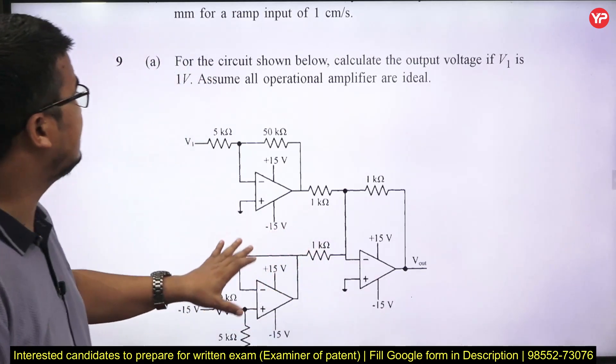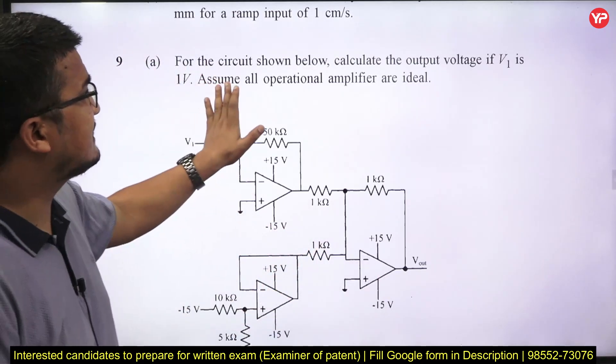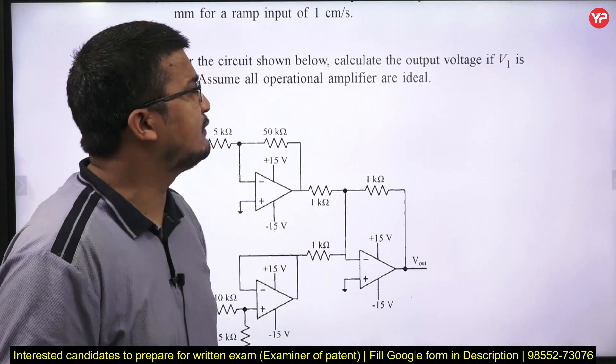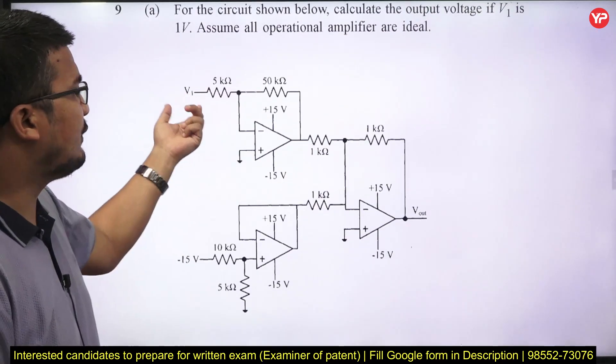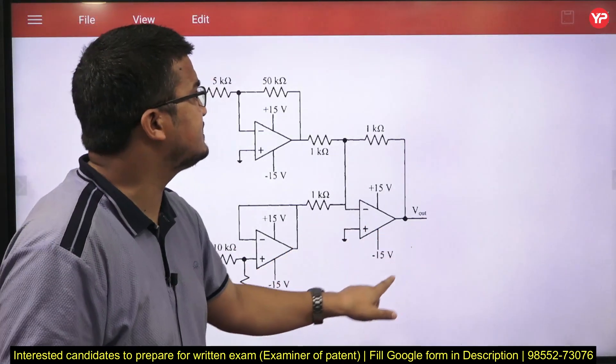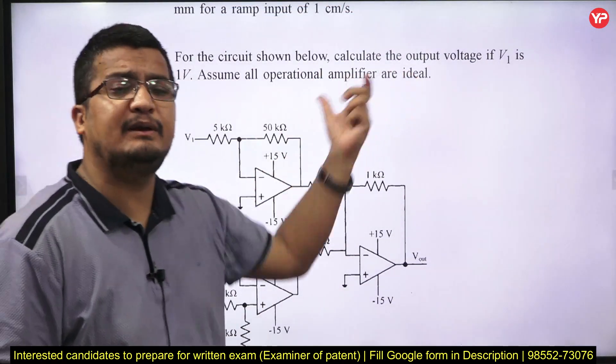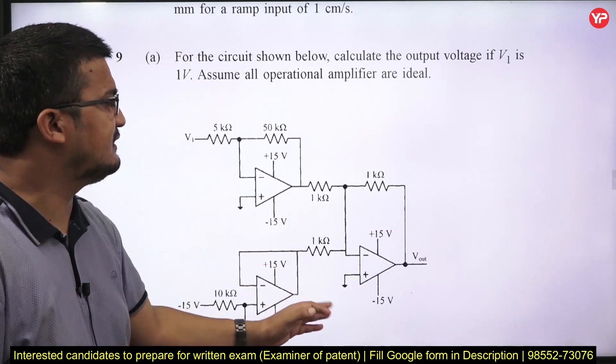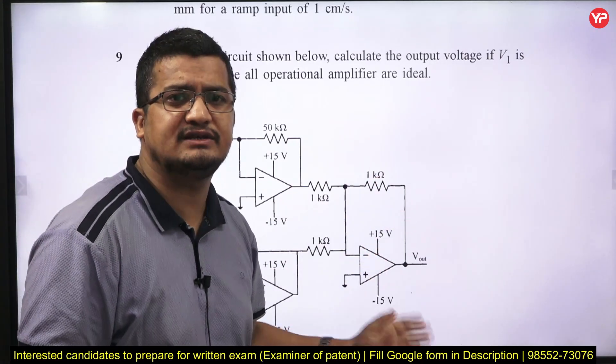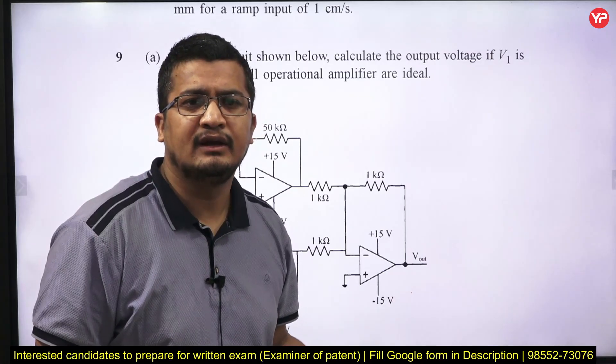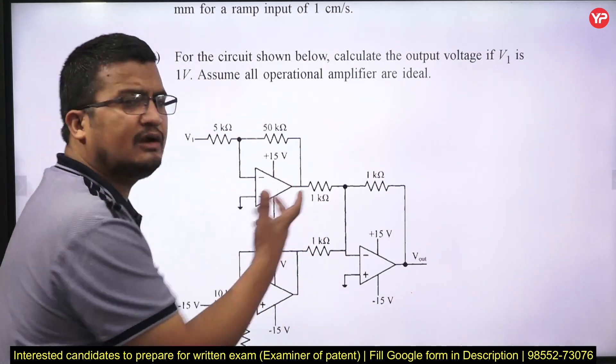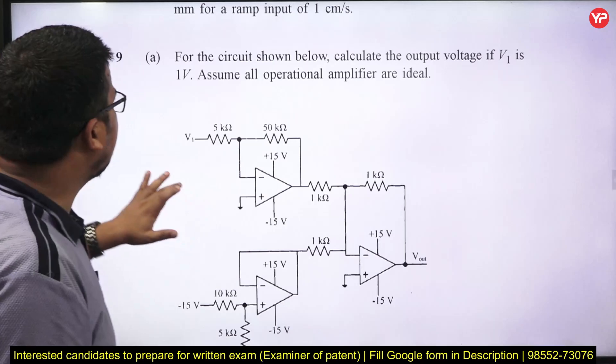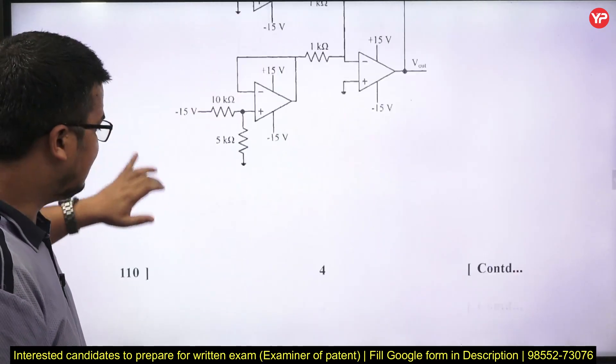Again very simple question. They have asked you for the circuit shown below, calculate the output voltage if V1 is 1 volt. This one is provided 1 volt and this output voltage is being asked and the given operational amplifier is ideal. Put the virtual ground condition and simplify this voltage, this voltage. Further one you can see what configuration is, you can calculate the output easily. So I believe this question will not take more than 4 to 5 minutes and this is entirely one separate section.